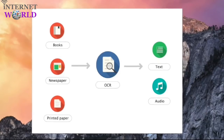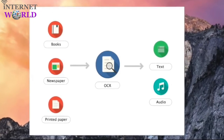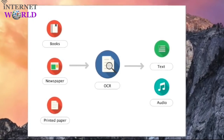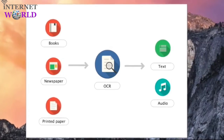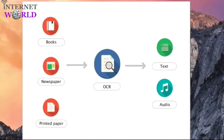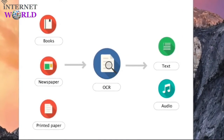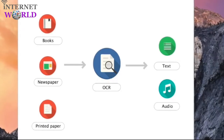With the OCR function, Natural Reader can read aloud any printed documents, including books, newspapers, and paper documents, converting them into text and audio files.